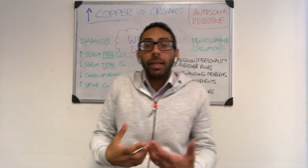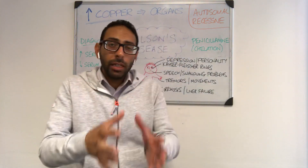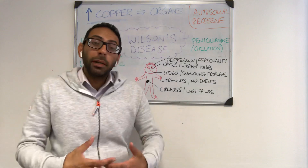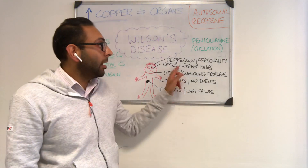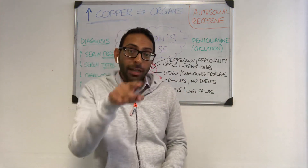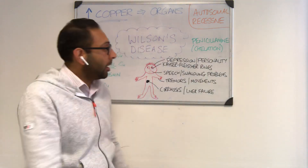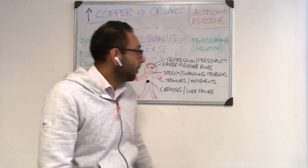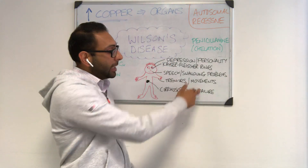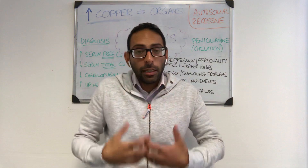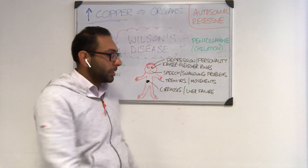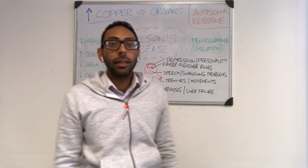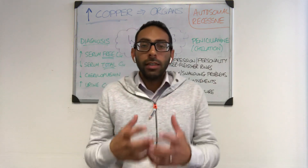How it presents depends on where the copper accumulates in your body. You can present in a number of different ways — for example, it can affect mood, causing things like depression, and personality change may be the first presenting feature. In the eyes, you get Kaiser-Fleischer rings. It can affect speech and swallowing because it gets into the nervous system. You can get tremors in the limbs and different movement abnormalities, and it can also affect the liver, causing liver cirrhosis and ultimately liver failure, presenting with the signs and symptoms of chronic liver disease.